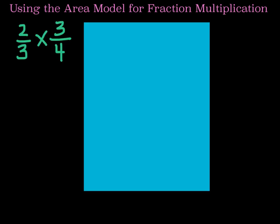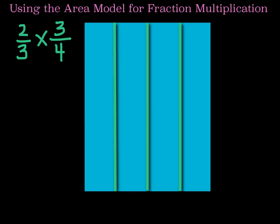The next thing that we are going to talk about is using the area model for fraction multiplication. You got a small taste of this in our last video. We are going to begin by multiplying two-thirds times three-fourths, and we're going to use the same method that we used in our last video called fractions of fractions. Beginning with the denominator of the second fraction, which is four, we are going to divide this rectangle into fourths vertically. Now our rectangle looks like this.